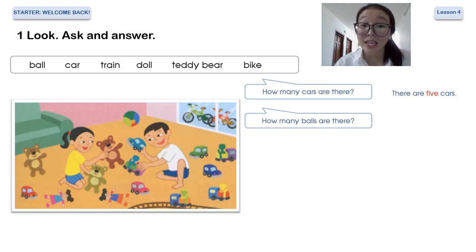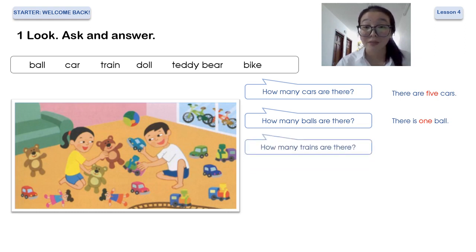There is one ball. Number three, how many trains are there? Train, train, train. And there are four trains. Can you see?